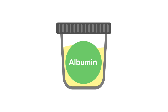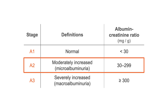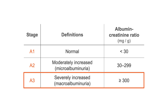Chronic kidney disease can also be staged using the level of albuminuria. The three albuminuria stages use definitions of normal, moderately increased, and severely increased albuminuria. A1 or normal is an albumin to creatinine ratio less than 30 mg per gram, equivalent to less than 3.4 mg per mmol. A2 or microalbuminuria is an albumin to creatinine ratio between 30 to 299 mg per gram, equivalent to 3.4 to 34 mg per mmol. A3 or macroalbuminuria is an albumin to creatinine ratio equal to or greater than 300 mg per gram, equivalent to greater than 34 mg per mmol.